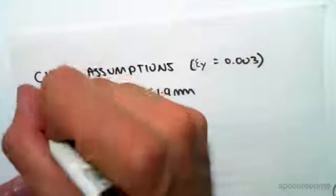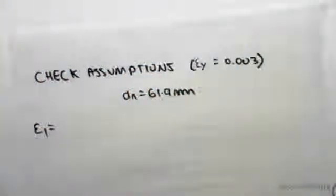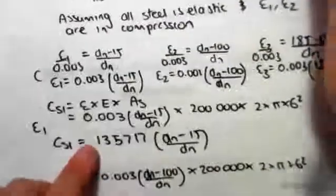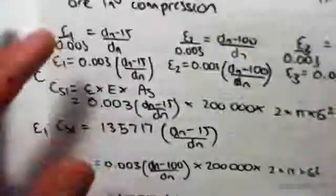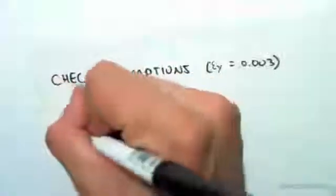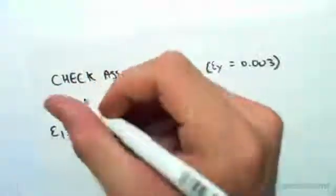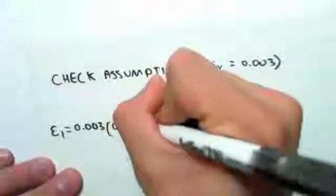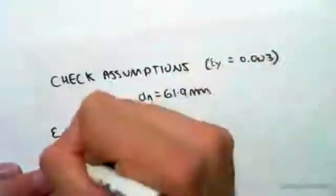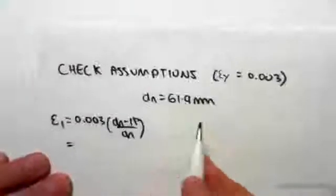So the strain in steel layer 1, straight back to the beginning video was found to be this equation here. So 0.003 outside of dn minus 15 on dn. Subbing in for dn, 61.9,